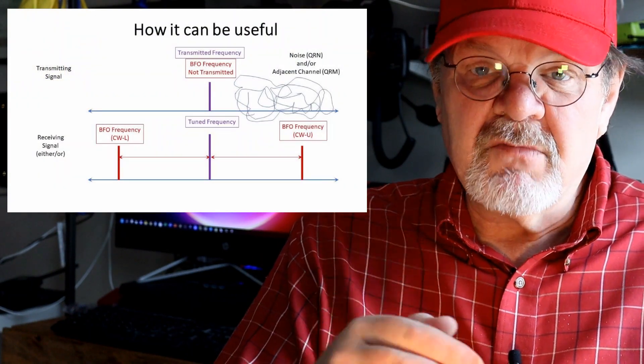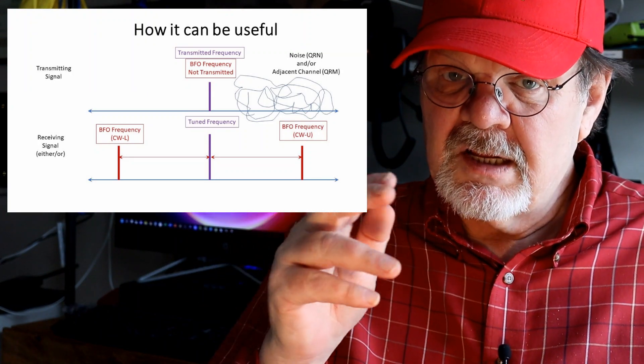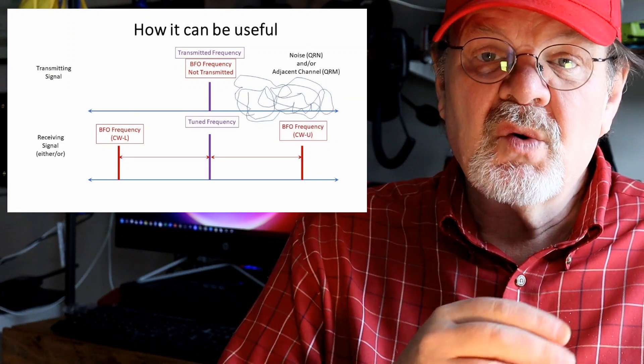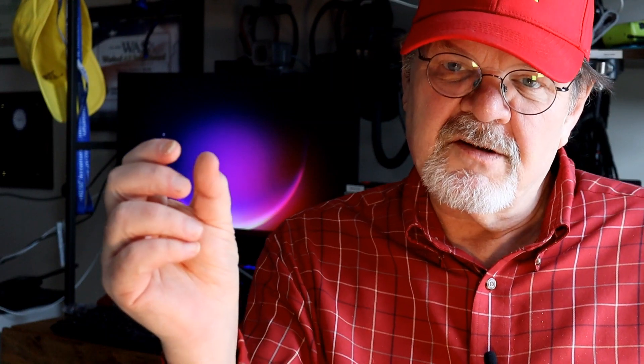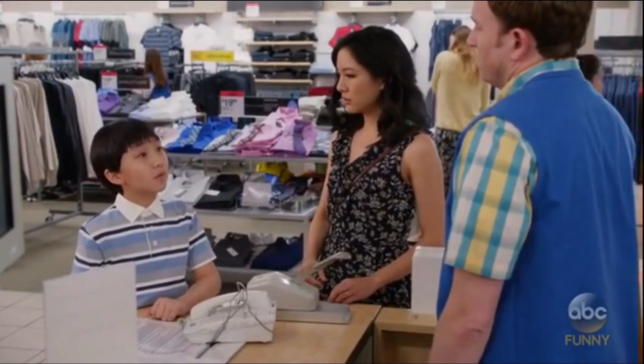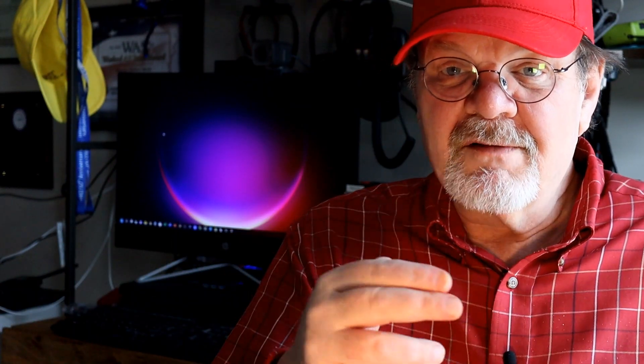Now, all that said, being able to choose your BFO offset can be useful in cleaning up your received signals. In cases where there is QRN — that's general noise — or adjacent channel interference, which is QRM, selecting the alternate mode can reduce these interfering signals. QRN is generally pretty widespread noise, so you can expect minimal improvement by swapping your offsets. But QRM usually has a very low width — it's another CW signal that's just encroaching into your band pass, Morse code. And by swapping from upper to lower or lower to upper, you can expect much better results.